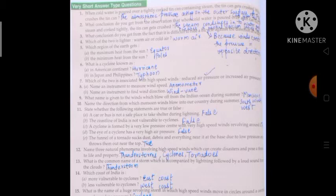Fifth one: which region of the earth gets A) the maximum heat from the sun? Answer is equator. B) the minimum heat from the sun? Answer is poles. Sixth one: what is the cyclone known as A) in American continent? That is hurricane. And B) in Japan and Philippines? Answer is typhoon.